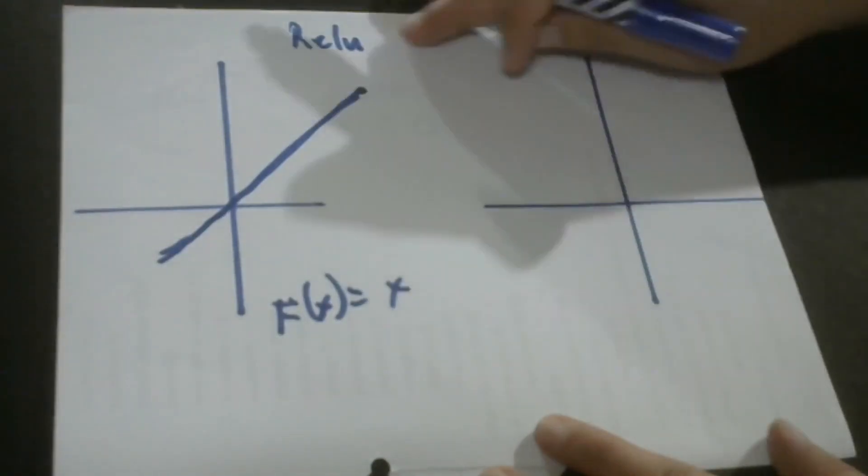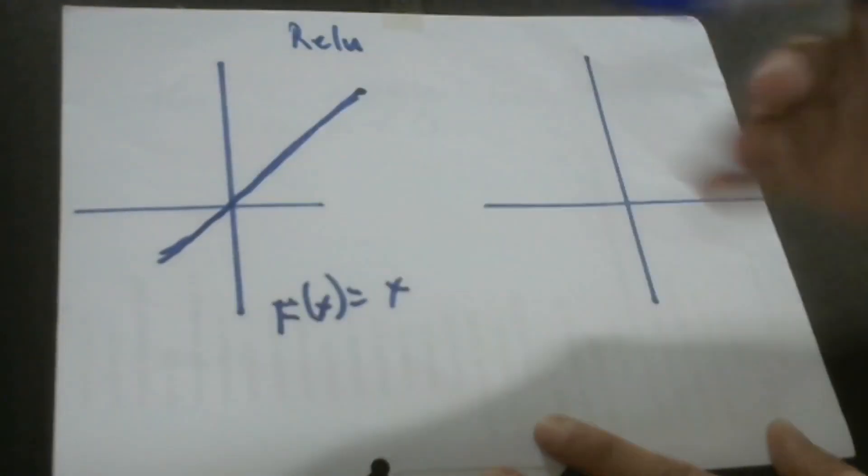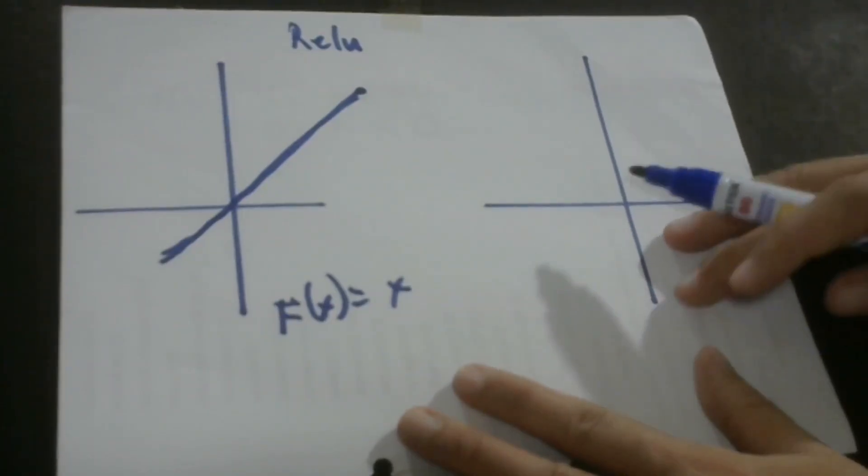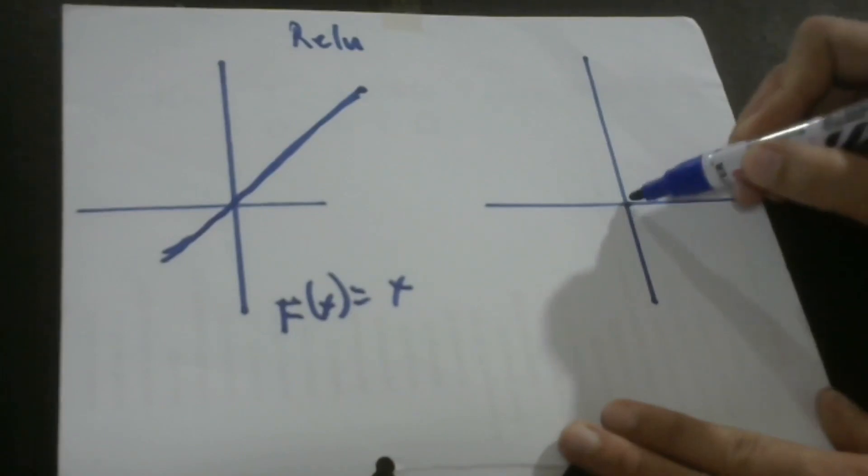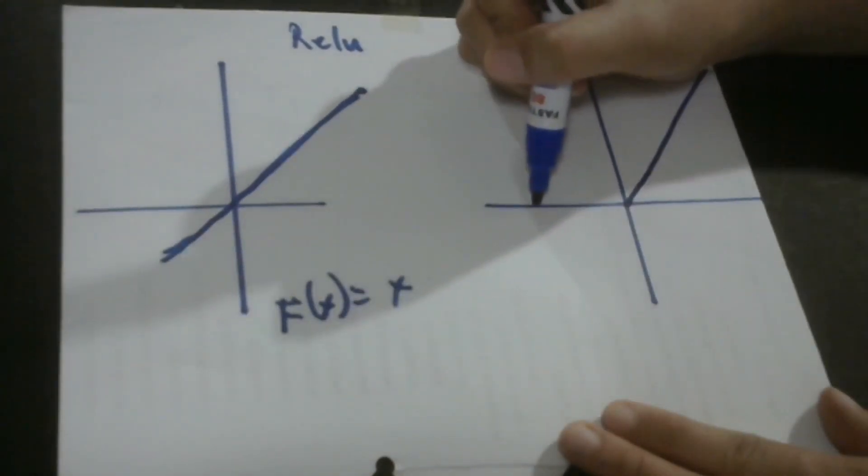In the case of RELU, it's going to be different, but they can be similar in a way that there is also a straight line. So, the straight line would start from this point, the origin or zero, and up. So, what about when we have the values that are negative?